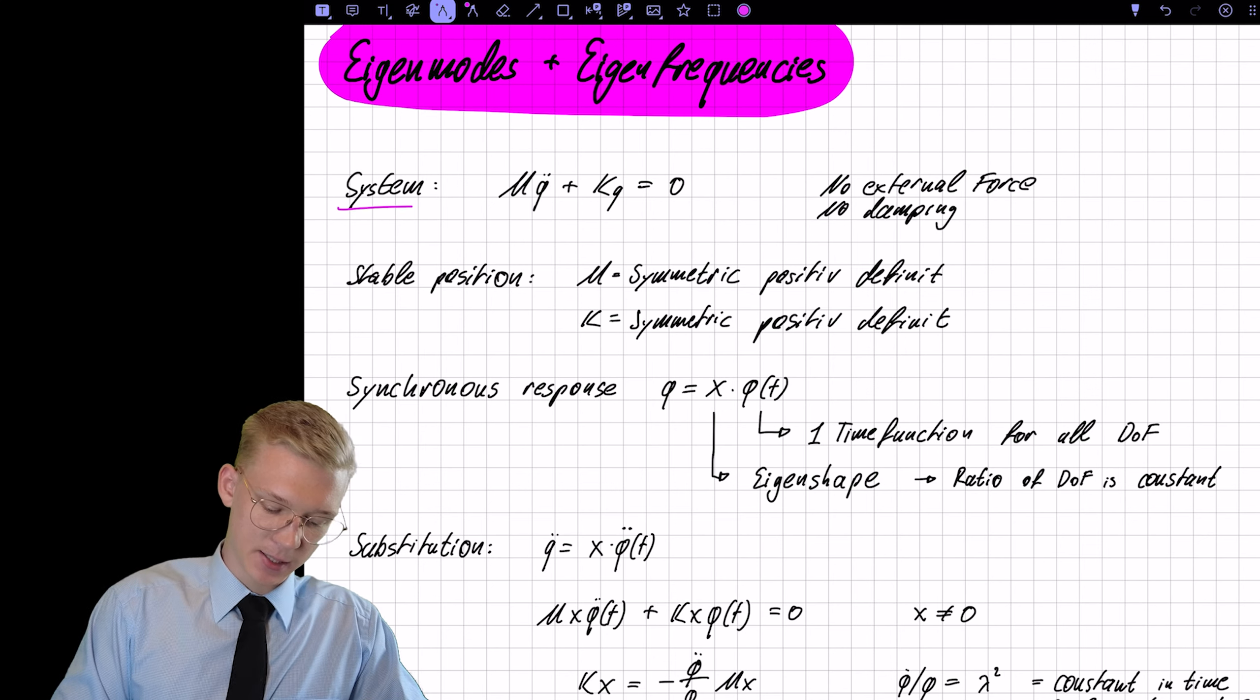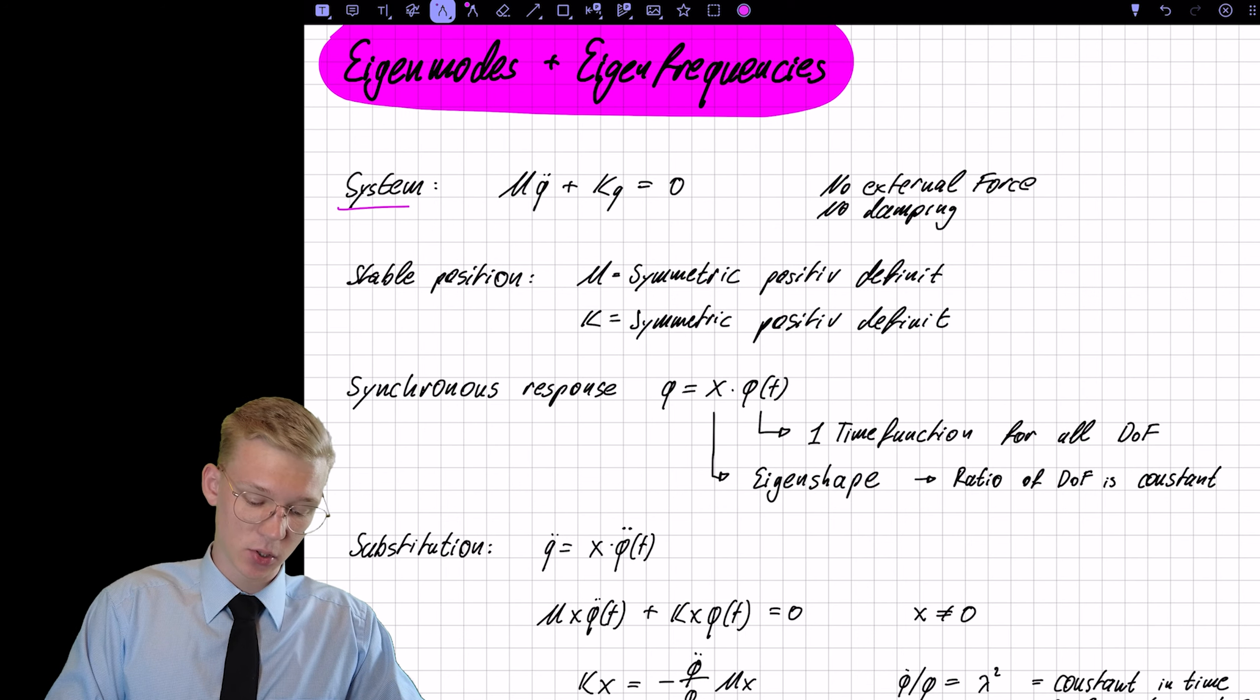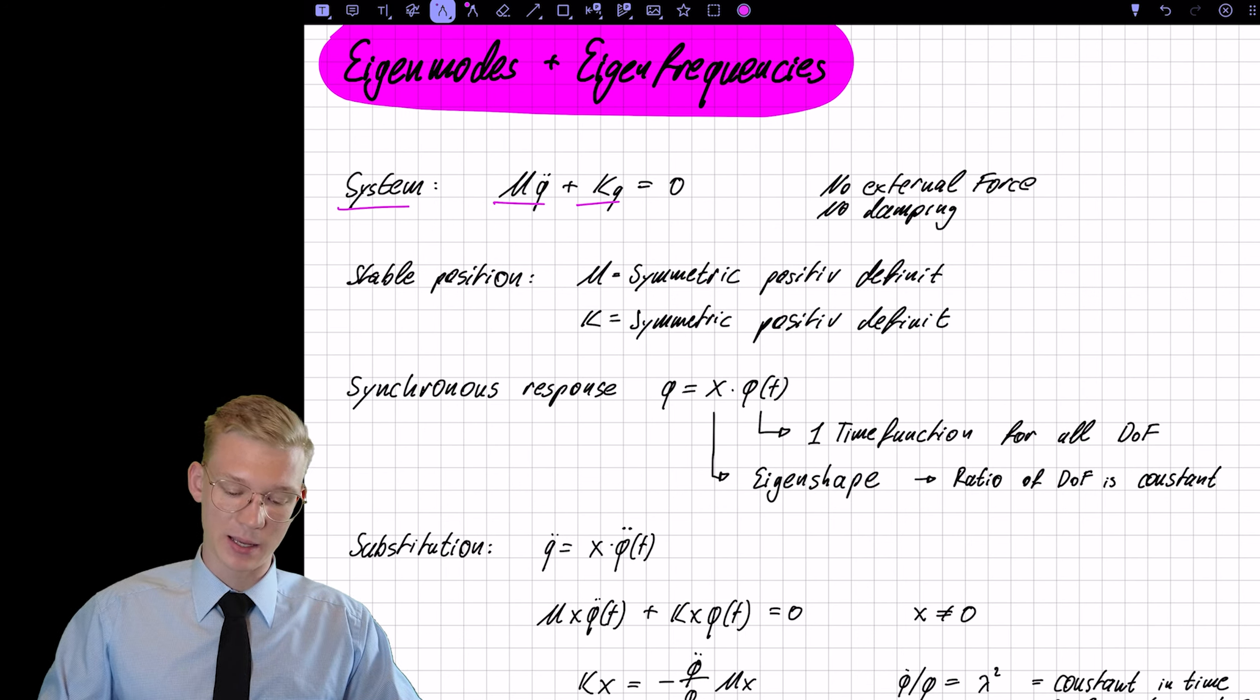We have a system and we already linearized that system so we have a mass matrix and a stiffness matrix, M and K. We have no external force and no damping.